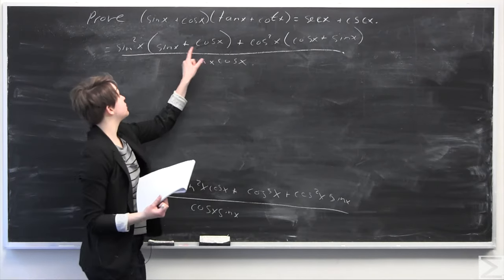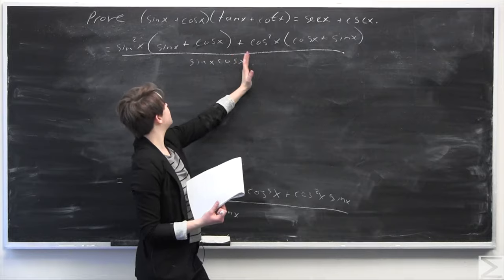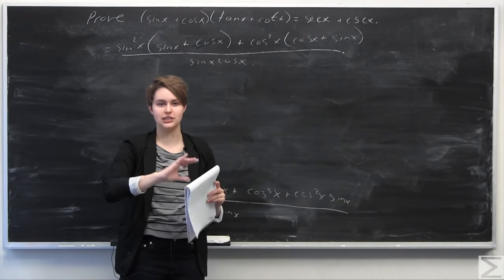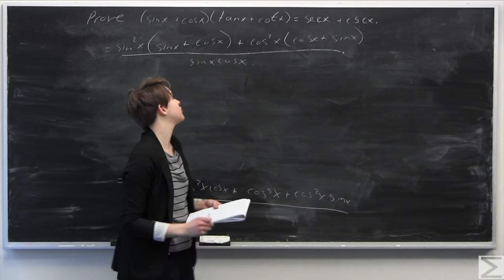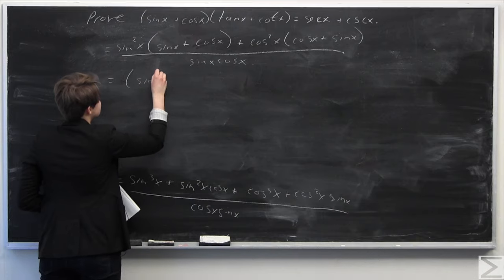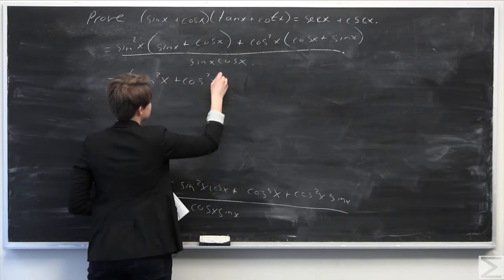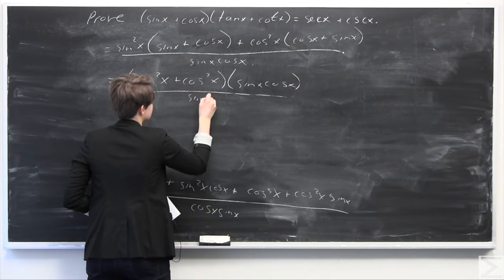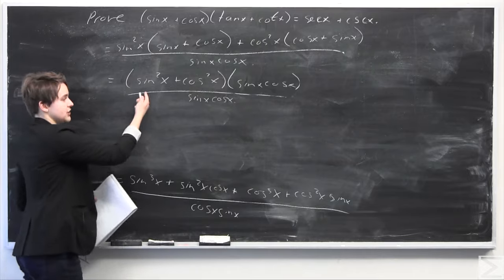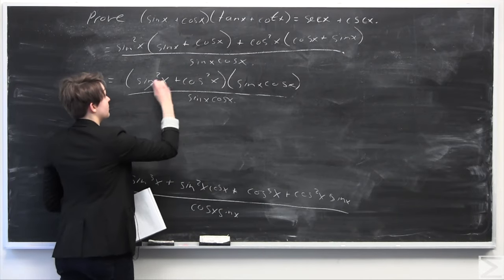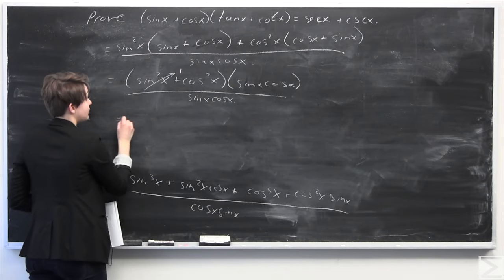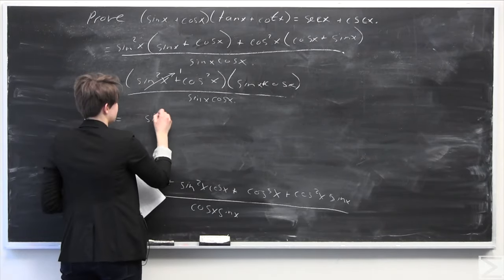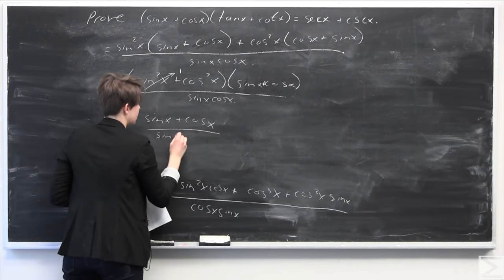As you can see, we have factored by grouping in such a way that we have the same factor in both groups. We have sine squared and cosine squared, and we know that sine squared of x plus cosine squared of x equals 1 by the Pythagorean trigonometric identity. So that factor simplifies to 1, and we're left with sine of x plus cosine of x, all over sine of x times cosine of x.